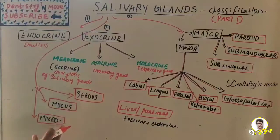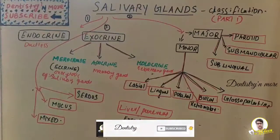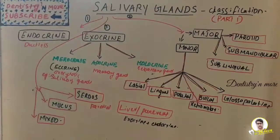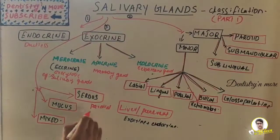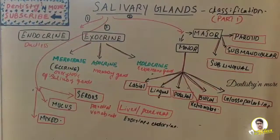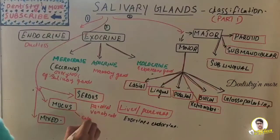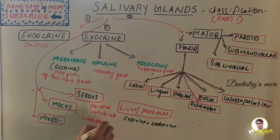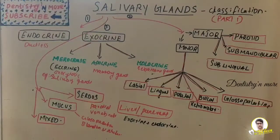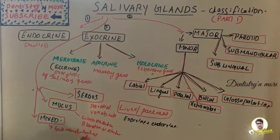Another classification is based on the type of secretion — serous, mucous, or mixed (combined serous and mucous). Serous secreting glands include the parotid and von Ebner's gland. Mucous secreting glands are the glossopalatine gland and glands of Blandin and Nuhn. Mixed glands are the submandibular and sublingual glands.